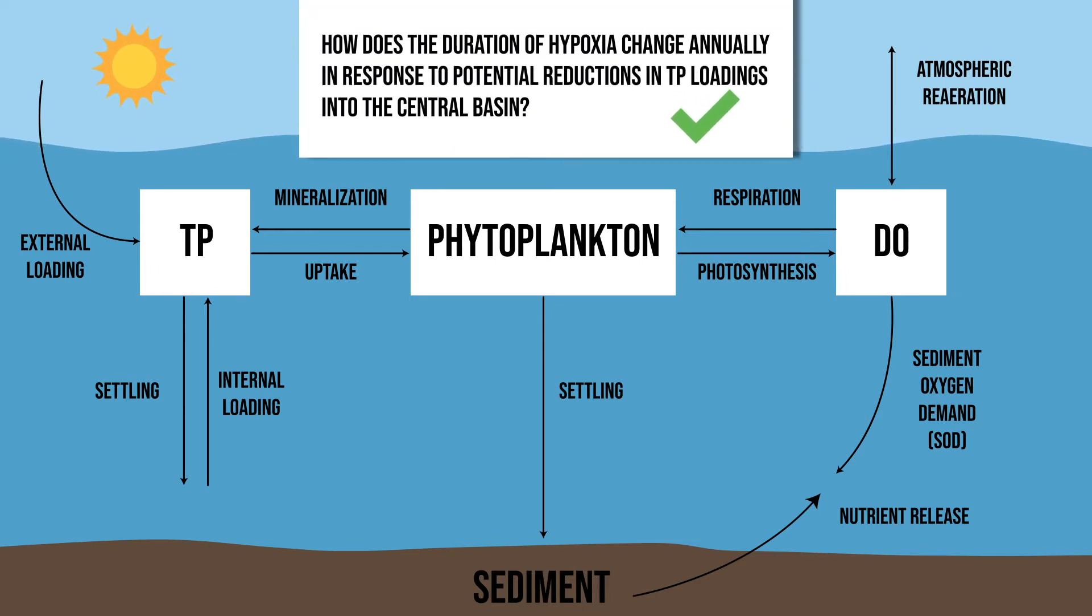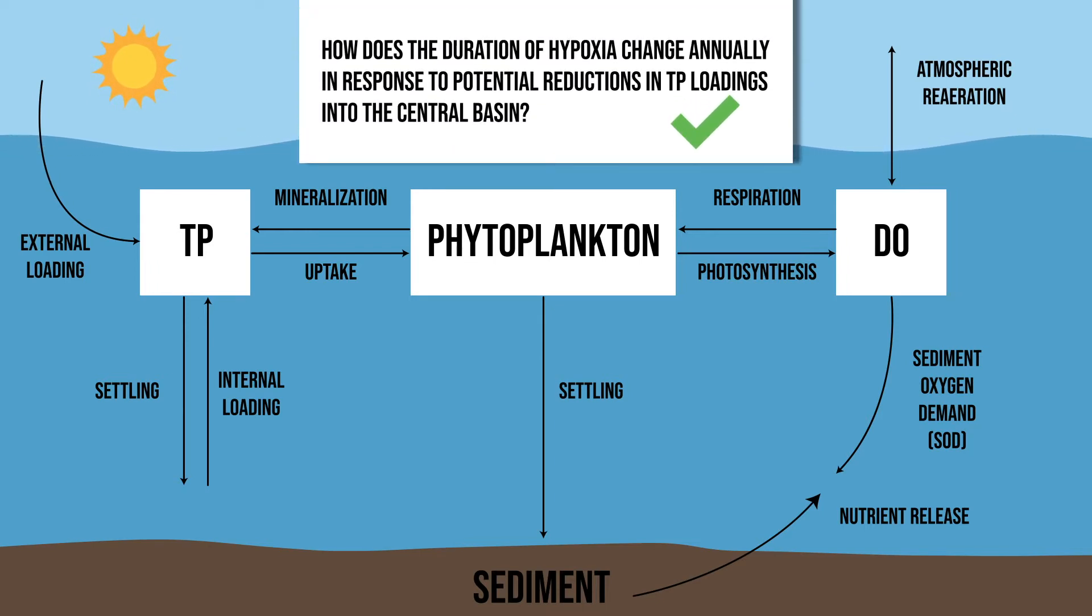Using this model, we can answer questions such as, how does the duration of hypoxia change annually in response to potential reductions in TP loadings into the central basin? Note that in this case, TP should be explicitly included in the model. The connection between TP and oxygen consumption and production should also be represented.